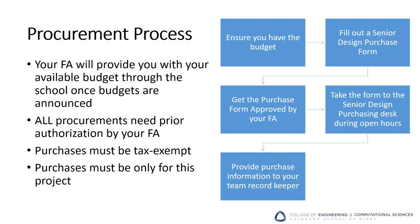See the Course Canvas site for hours and location. If it's an online purchase, the TA at the desk will complete the purchase for you and provide a receipt. If the purchase is at a local vendor, you can check out the card for short periods of time and bring the TA the card and a receipt back when you return. Finally, you'll need to make sure to coordinate with your team record keeper so that your budget is kept up to date. One note on purchases under $50: reimbursement via petty cash may be an option — ask your FA. Of course, advanced approval via the Senior Design purchase form is still required.